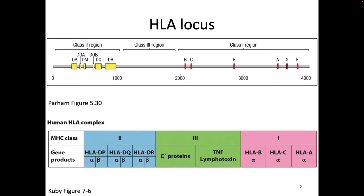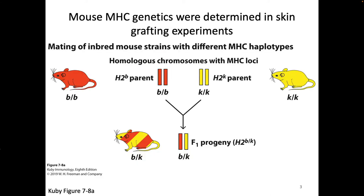The human MHC was really first described by people who were looking at weird antigens on the surface of some cells in pregnant women — just a weird antigen on leukocytes, hence the name human leukocyte antigen. They didn't know anything about it or what it did; that's just what they called it. The mouse MHC was described in experiments using skin grafting.